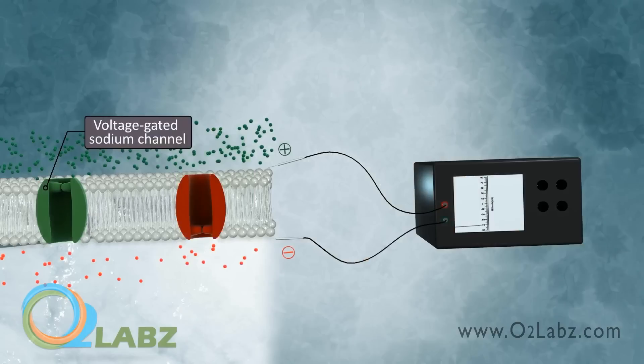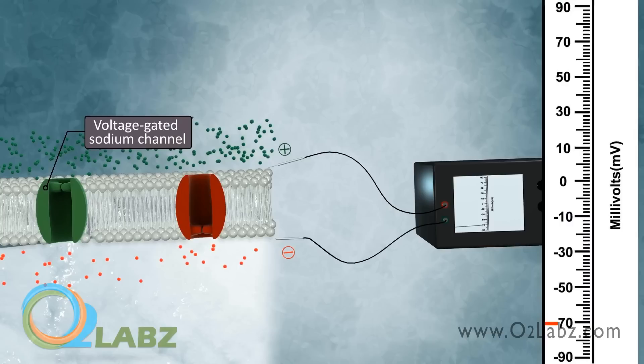A voltage-gated channel opens at a specific voltage, referred to as the threshold. For example, the threshold for a voltage-gated sodium channel is around negative 55 millivolts. When the membrane voltage increases from its resting state of about negative 70 millivolts to the threshold, the channel gate opens, and sodium diffuses through the channel to the other side of the membrane.